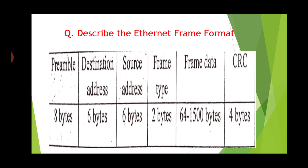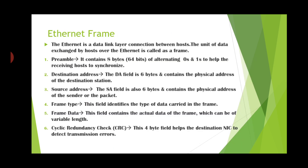Now we will see the Ethernet frame format. There are a total of six fields: preamble, destination address, source address, frame type, frame data and CRC. Each field has a different length. The Ethernet is a data link layer connection between hosts. The unit of data exchanged by hosts over the Ethernet is called a frame. The first field of Ethernet is the preamble. It consists of 8 bytes or 64 bits of alternating zeros and ones, to help the receiving host to synchronize.